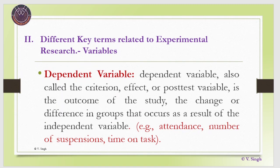The dependent variable, also called the criterion, effect, or post-test variable, is the outcome of the study — the change or difference in groups that occurs as a result of the independent variable. These are variables in which changes are minutely observed and interpretations are made that the changes were produced due to the independent variable. In our example, achievement in science is the dependent variable. Other examples include student attendance, number of suspensions, time taken on a task, and student interest.